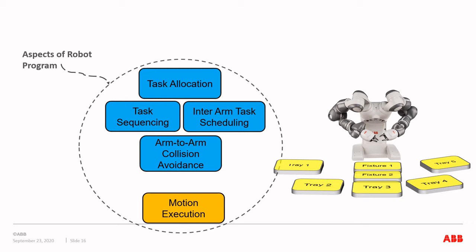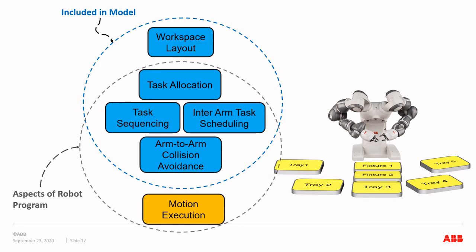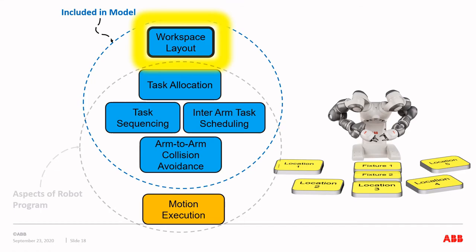Finally, we come to workspace layout — an aspect of the robot installation included in our model. By including workspace layout in the model, we allow locations to be variables. This makes a big difference. If you remember only one thing from this presentation, it should be that the locations of tasks are variables. To put it in perspective, this is equal to solving a traveling salesperson problem where you also decide where the customers live. This is a natural formulation in many industrial robot applications, since not only do we control the environment, we actually need to make these decisions anyway.